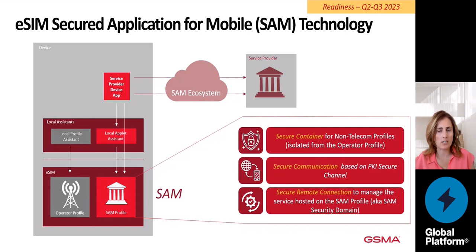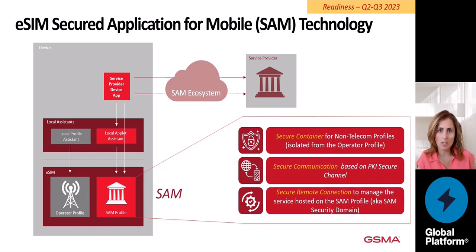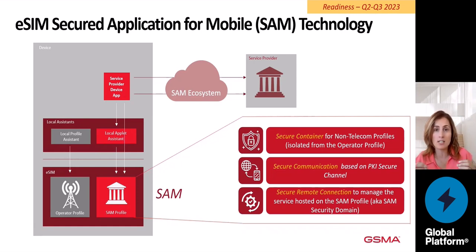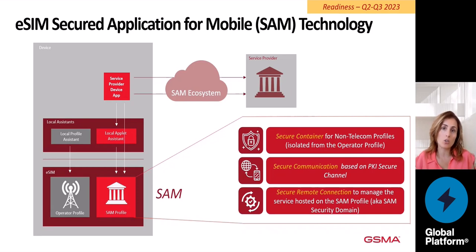Now it is time to introduce the SAM technology. Following my explanation on the ISIN, we know that the ISIN allows the operator to install their profiles, and the way those profiles are managed is defined by the GSMA ISIN specification. Additionally, we can use the ISIN space to store what I call a SAM profile. This is what the SAM technology is providing: a secure container for non-telecom profiles which are isolated and independent from the operator profile. It also offers a secure communication based on a PQI secure channel, allowing the service provider via secure remote connection to manage their own services hosted on what I call a SAM profile — which is indeed a SAM security domain according to the GlobalPlatform specification. This is what the SAM technology is offering: the possibility for service providers to manage their non-telecom services independent of the operator profile.